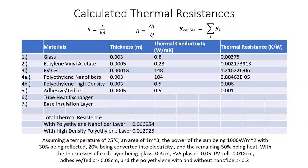We have equations here related to thermal resistance. As a proof of concept, we assumed a PVT system with an area of one meter squared, assigned certain thicknesses to each of our seven layers, and found appropriate thermal conductivities from various sources. Using these thermal resistance equations, we calculated the thermal resistance for each layer. Since these layers are in series, we can add the thermal resistances to get the total thermal resistance for the PV layer.